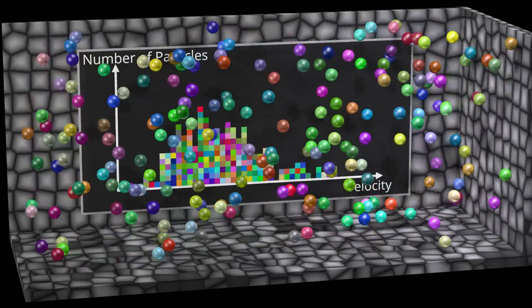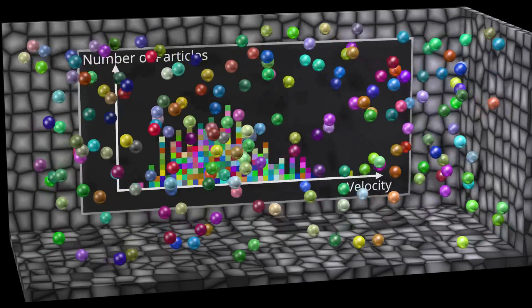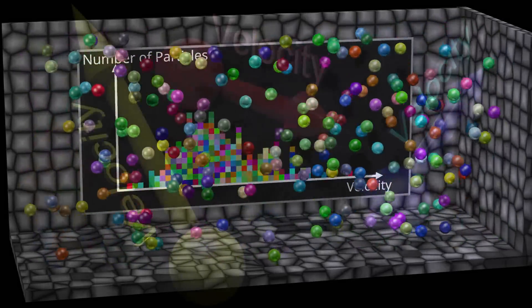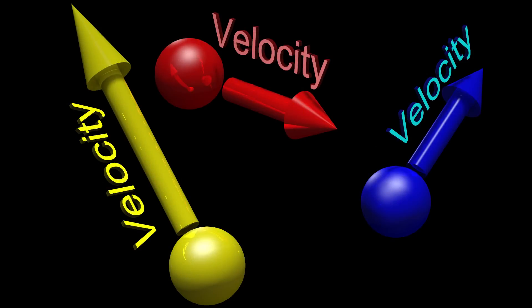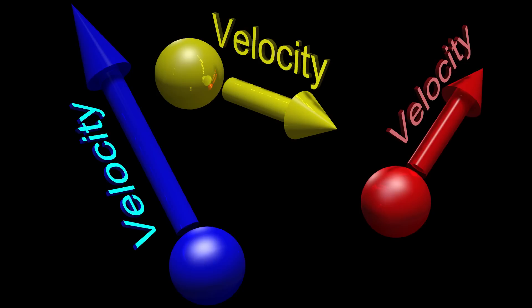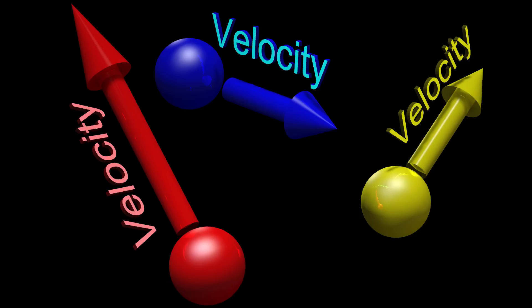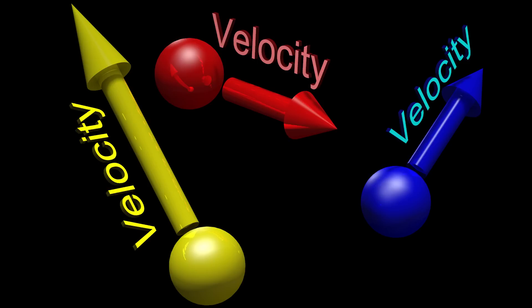Consider the positions and velocities of several identical particles at a given moment in time. Now consider a situation where we have the exact same set of positions and velocities, but we swap the colors of the particles. In a classical system, we can do this because the particles are distinguishable, and each of these cases is counted as a separate possible microstate. However, in a quantum system, identical particles are indistinguishable, and therefore all these cases are counted as only a single possible microstate.